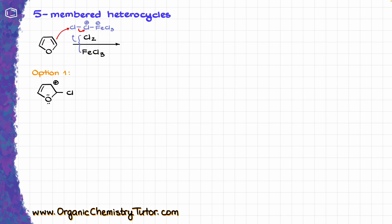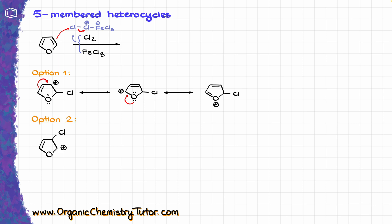If I start drawing my resonance structures for option one, I can show the electrons going over here, giving me the following contributor. Then from this contributor, the oxygen has some electron pairs on it, and the oxygen can also participate in this resonance, giving me the following resonance contributor — so three total. My second option is going to be chlorine attacking the other position, a little bit further away from my heteroatom. In this case, the only viable resonance possibility is going to use the oxygen. I take the electrons on my oxygen, move them towards my carbocation, giving me the following resonance contributor — and that's about it for the reasonable resonance contributors.